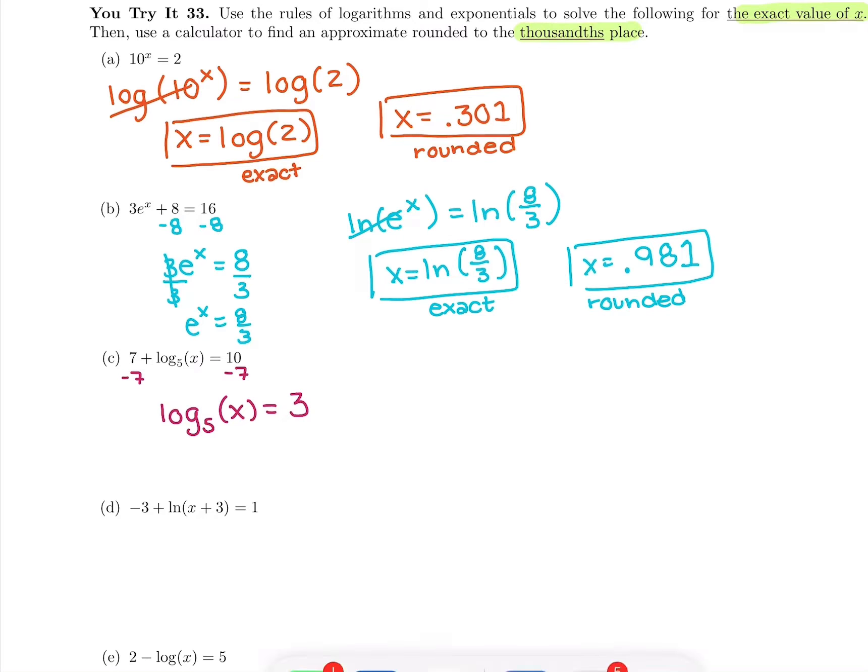Now I have the log on one side by itself, so I'm going to raise it from base 5 to cancel out. So x is just going to be 5 to the third. Or I can plug that into my calculator, and 5 to the third is 125.